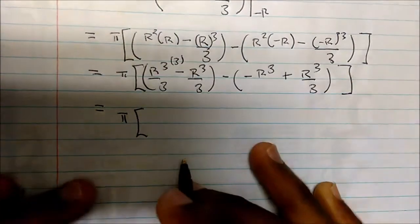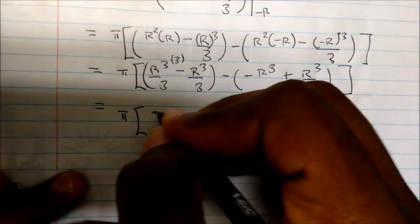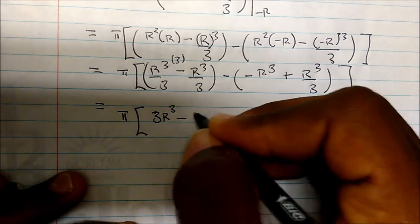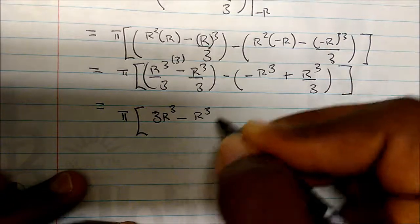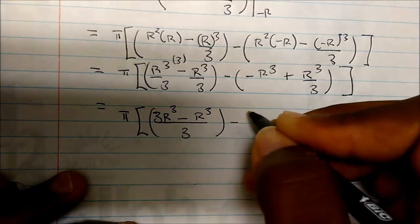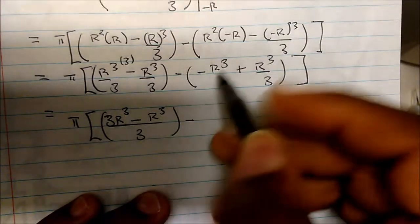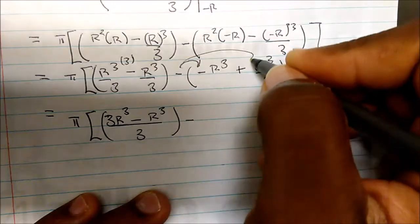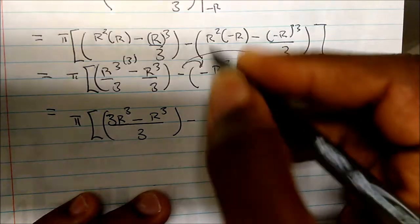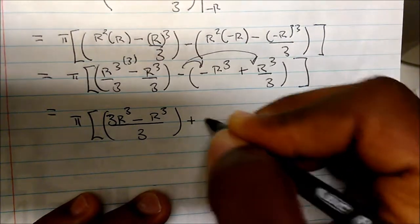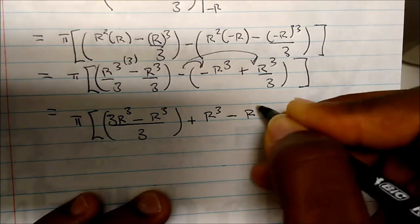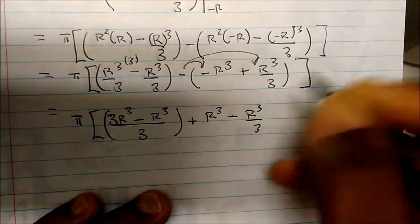Finding common denominators — multiplying through by 3 — this becomes π times 3r cubed minus r cubed over 3. Then distributing the negative gives plus r cubed minus r cubed over 3.